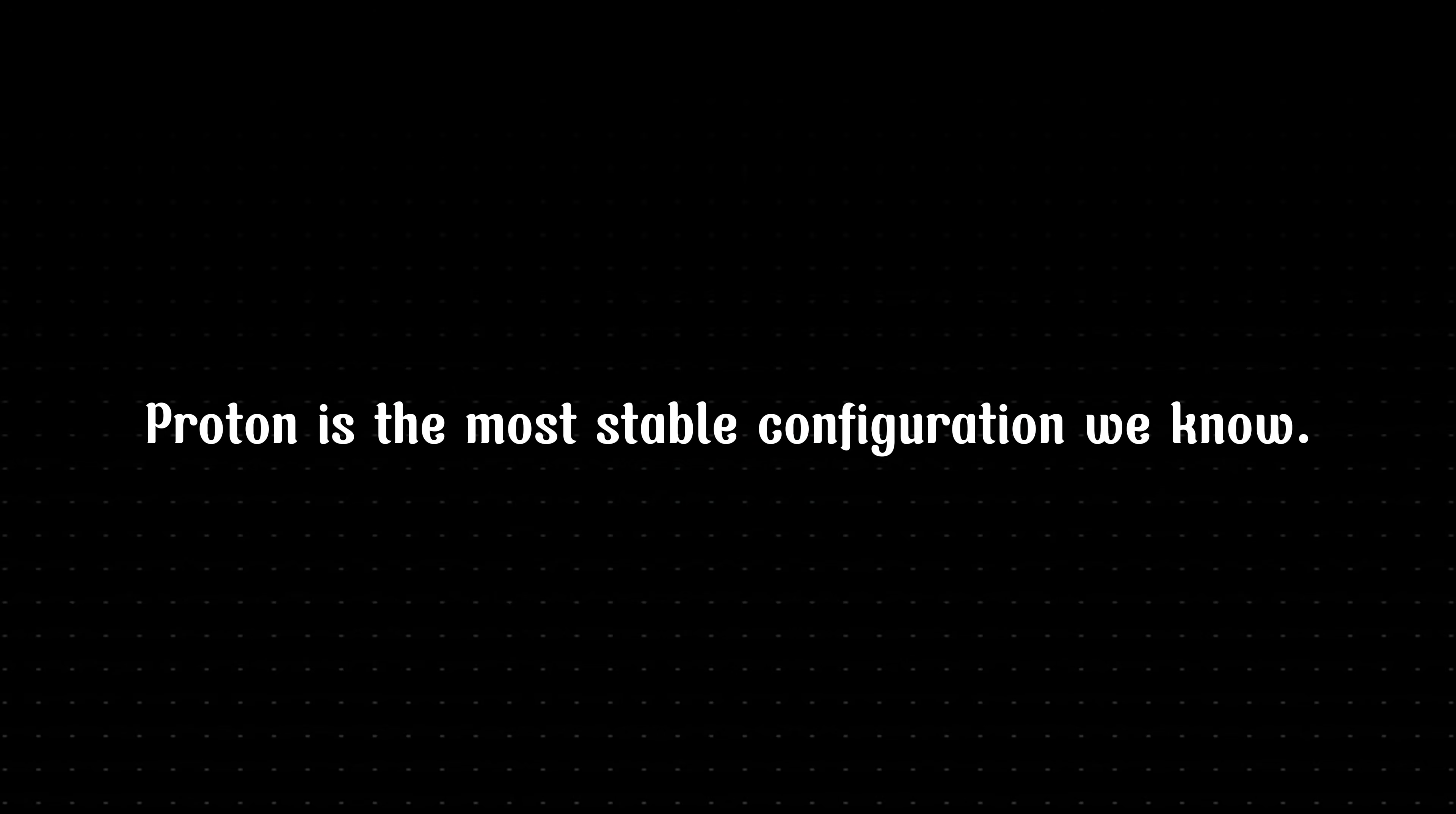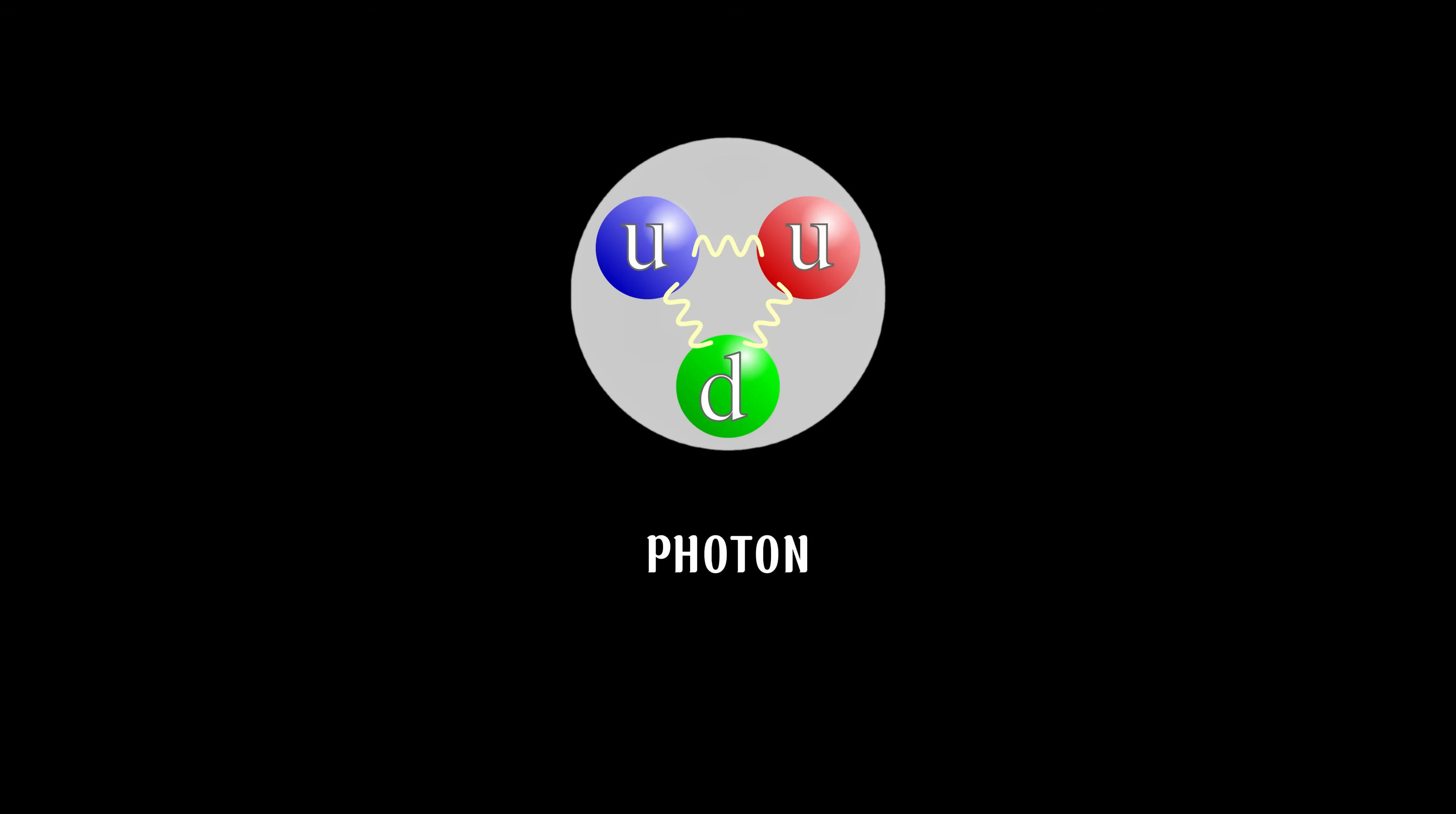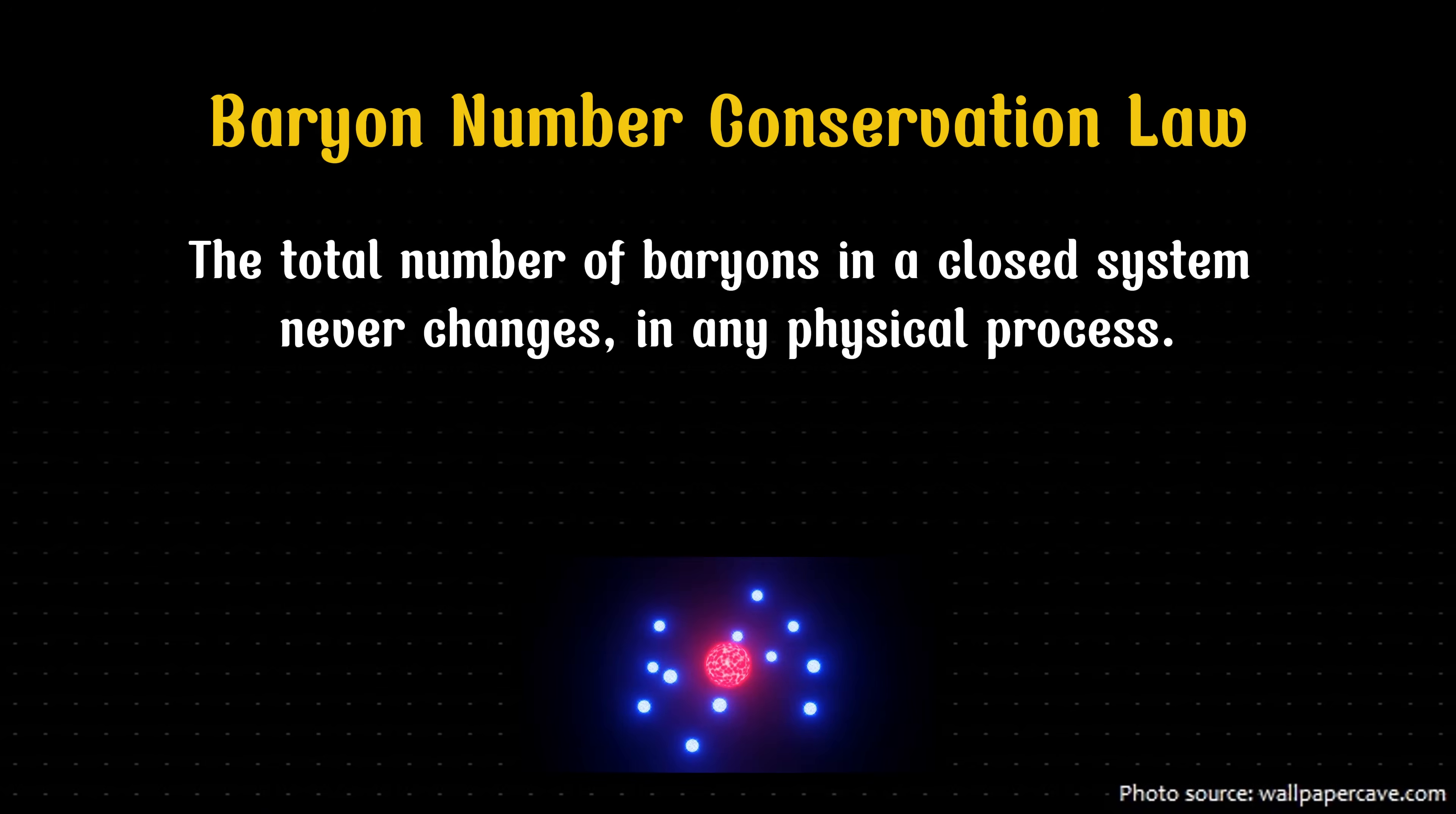Being slightly heavier than a proton, the neutron seeks a more stable state by decaying into one. Is the proton the most stable configuration? Or could it decay into something even more stable? The answer? The proton is the most stable configuration we know of. No one has ever observed a free proton decaying on its own.